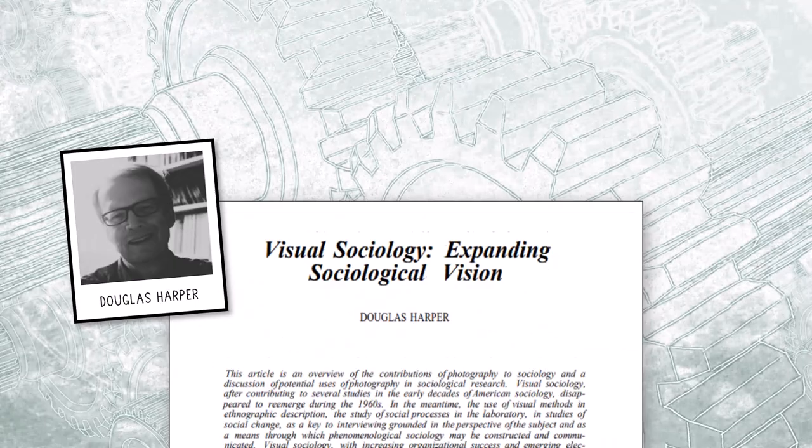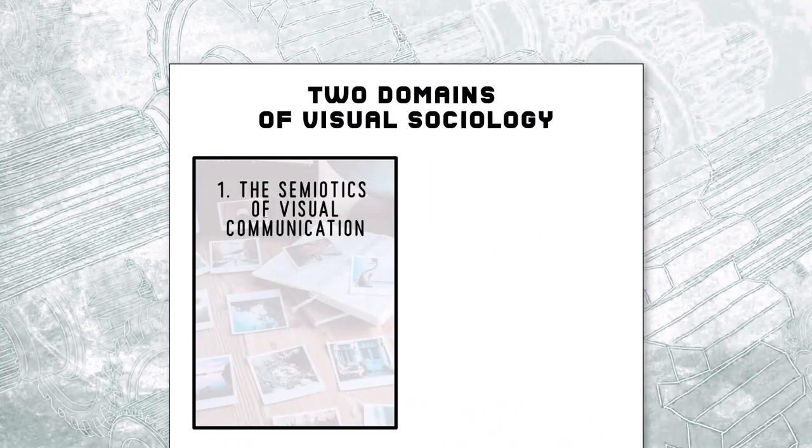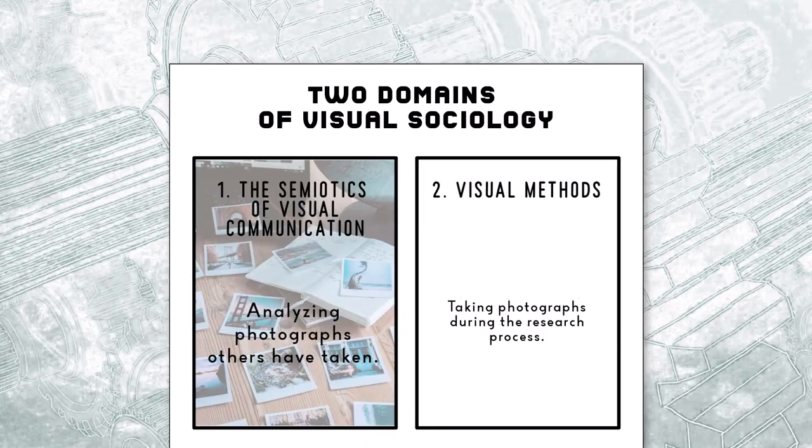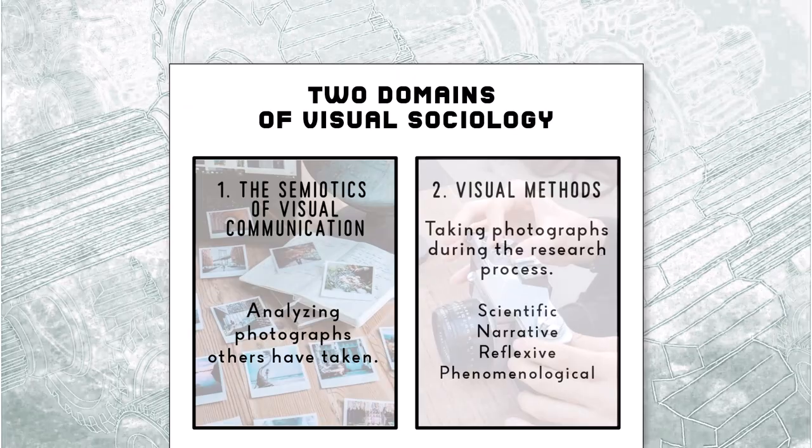Douglas Harper casts visual sociology as consisting of two domains. The first is the semiotics of visual communication, which involves analyzing photographs others have taken. The second domain, visual methods, entails taking photographs during the research process and has modes: scientific, narrative, reflexive, or phenomenological.